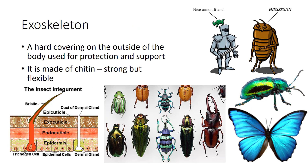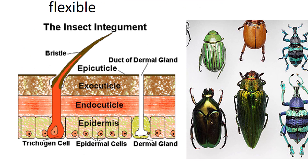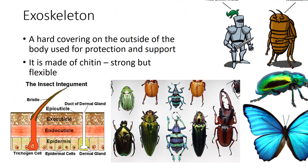A feature of arthropods, which includes insects, is that they have an exoskeleton rather than an internal skeleton like we do. The exoskeleton provides a rigid foundation for the body and serves as a point for attachment of the muscles. Certain body parts are hardened or sclerotized, while others are membranous. The insect's cuticle consists of three primary layers—the epicuticle, exocuticle, and endocuticle. Chitin in the exocuticle gives the cuticle strength.